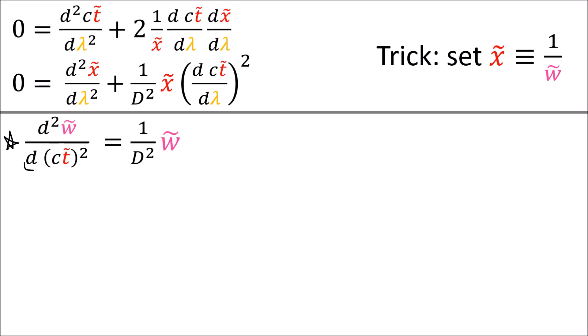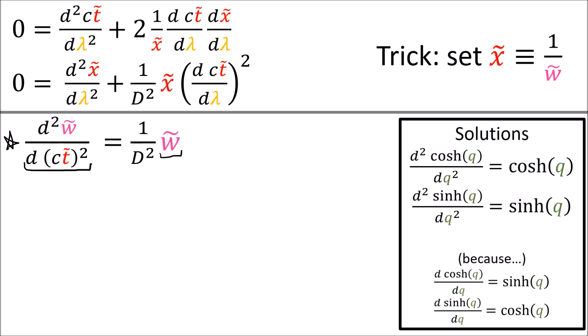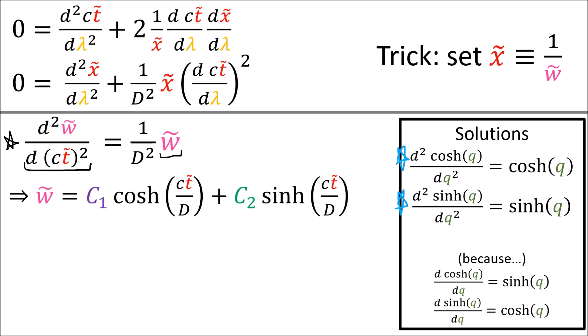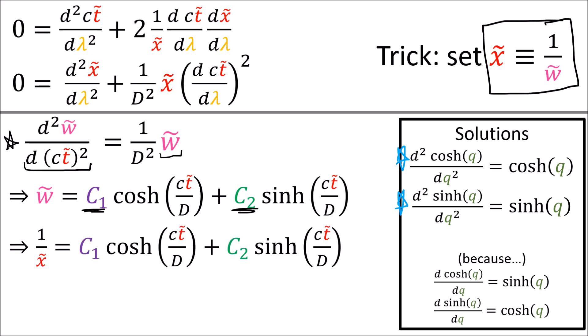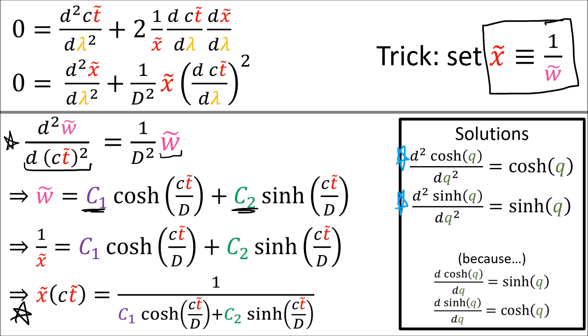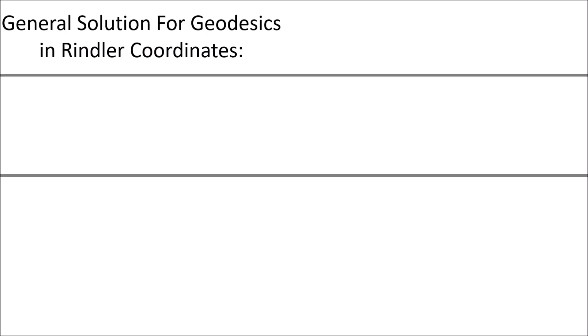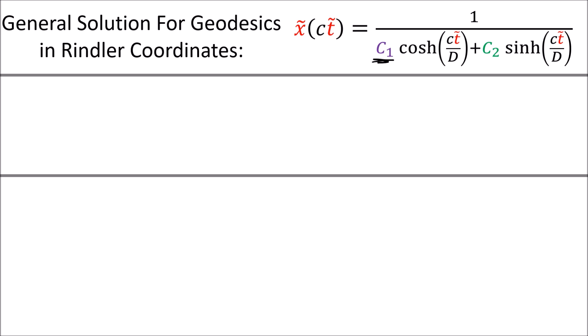Basically, this means that the second derivative of w-tilde is proportional to itself. There are exactly two functions that have this property, which are cosh and sinh. So w-tilde equals any combination of cosh and sinh of ct-tilde over d, with arbitrary constants c1 and c2 in front. And remember, w-tilde is just 1 over x-tilde. Taking the reciprocal of both sides, we get a final expression for geodesics in Rindler coordinates: x-tilde equals 1 over (c1 times cosh plus c2 times sinh). By making different choices for the constants c1 and c2, we can get every possible geodesic in the Rindler coordinate system.